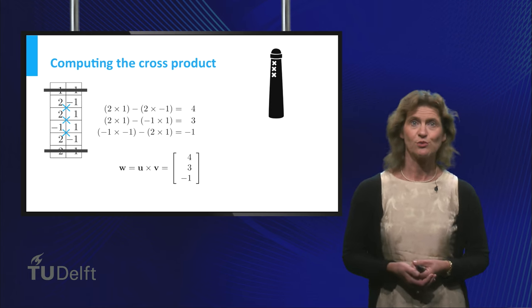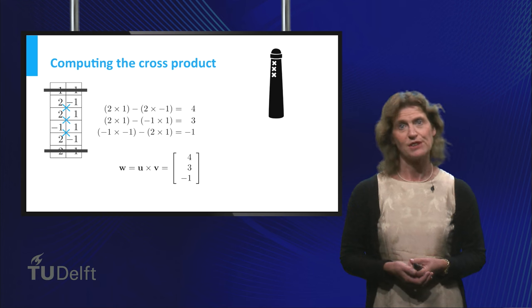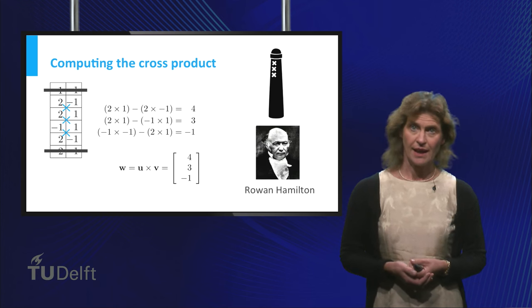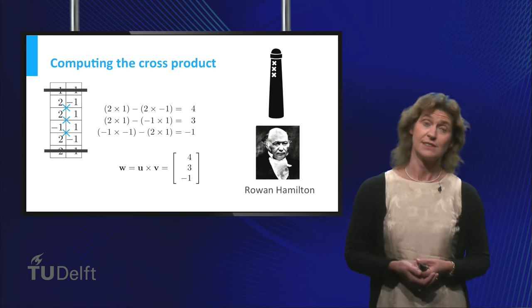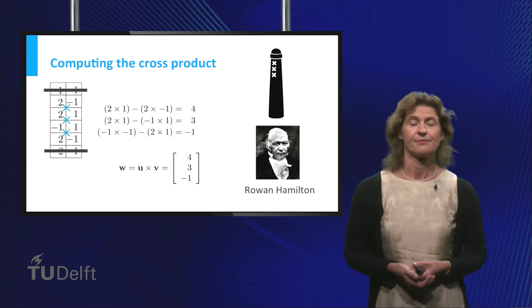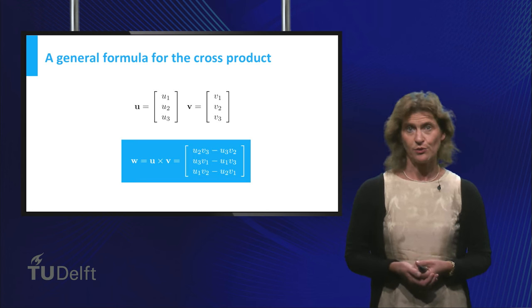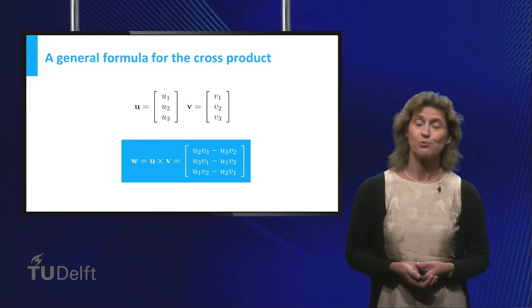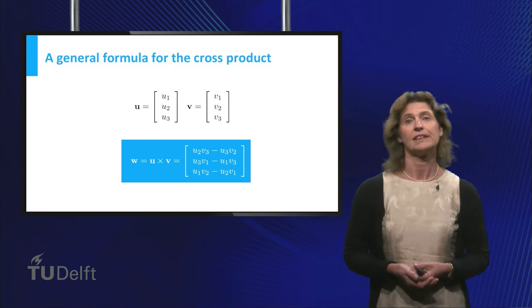The cross product was introduced by the famous British mathematician Rowan Hamilton in the early 19th century. In general, the formula found from the Amsterdam method to compute the cross product of the vectors u and v is shown here.